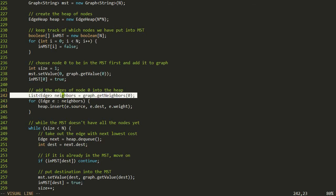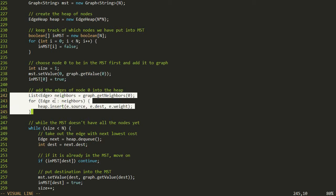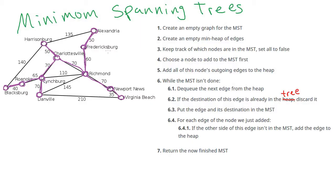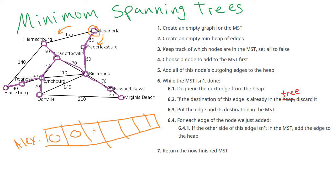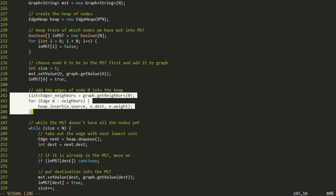This is why it's important that we used an incidence list — we only loop through edges that actually exist for a given node. If we used an adjacency matrix instead, we'd have to loop through the whole row and check every potential edge, even if almost all of them are zeros: is there an edge to Harrisonburg? Yes. To Fredericksburg? Yes. To Richmond? No. Newport News? No. And so on. The incidence list approach is more efficient.